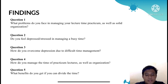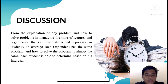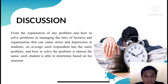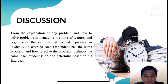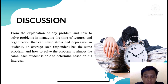The next slide is discussion. From the explanation of problems and how to solve them in managing the time of lectures and organization — which can cause stress and depression in students — on average, each respondent has the same problem, and how to solve it is almost the same. Students are able to determine, based on their interests, the priority time. In the Student Activist Plan, academics are more prioritized. So students of the Pharmacy Study Program of Muhammadiyah University of Yogyakarta choose to complete academic tasks before organizational tasks.